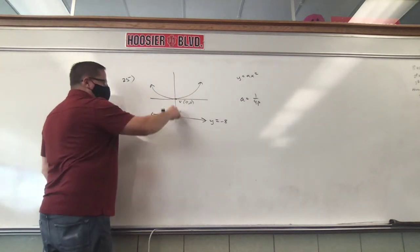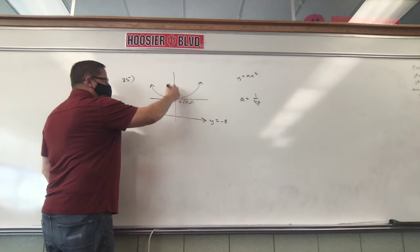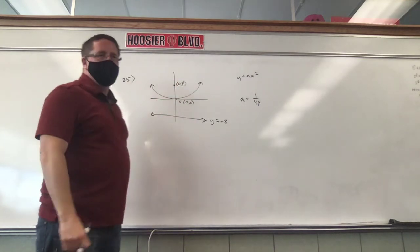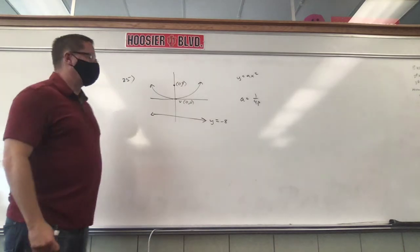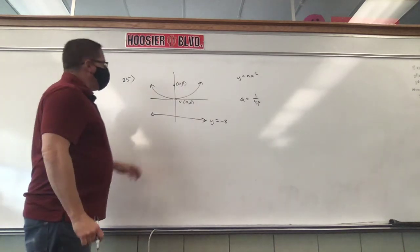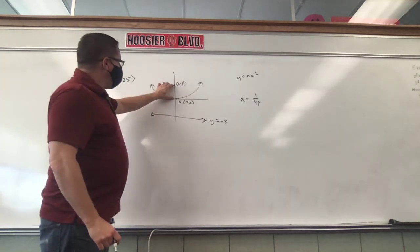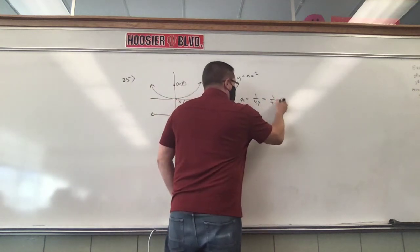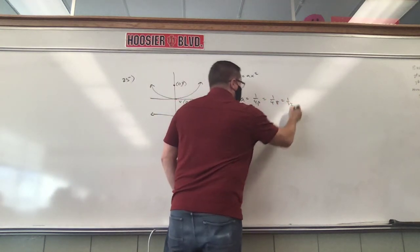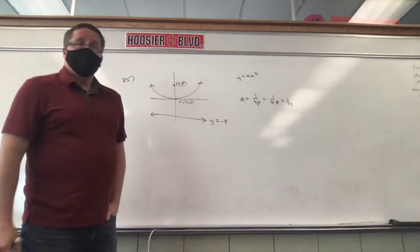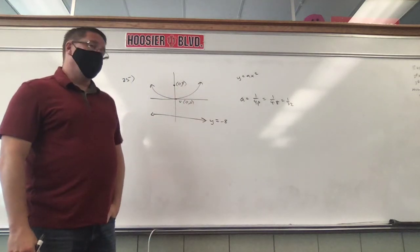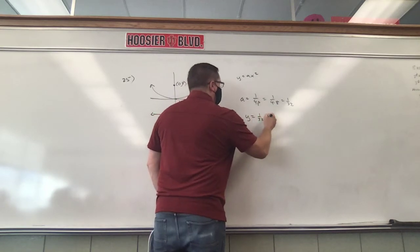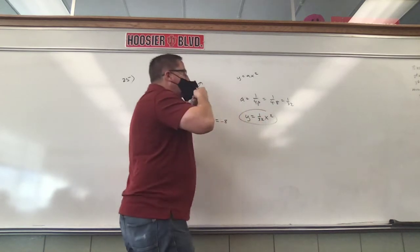They didn't ask us for the focus, but we should be able to figure it out. If the directrix is 8 units down, the focus would be at 0, 8. So p is 8 from here or 8 from here — it doesn't matter. So 1 over 4 times 8, which is 1 over 32. And there's only one more thing to do: plug it in — y equals 1/32 x squared.